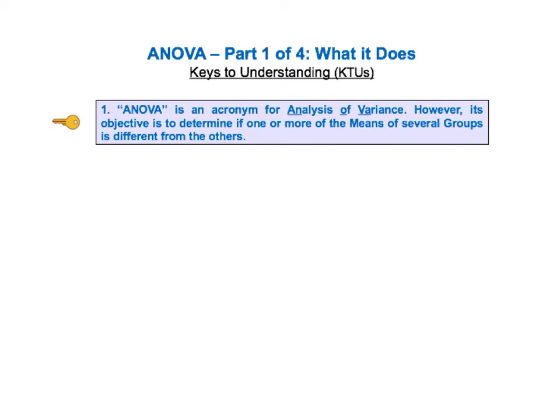As usual, in the book and in these videos, we'll go quickly through a list of keys to understanding, or KTUs, and then we'll go into detailed explanations of each of the keys. The first key to understanding is that ANOVA is an acronym for Analysis of Variance.